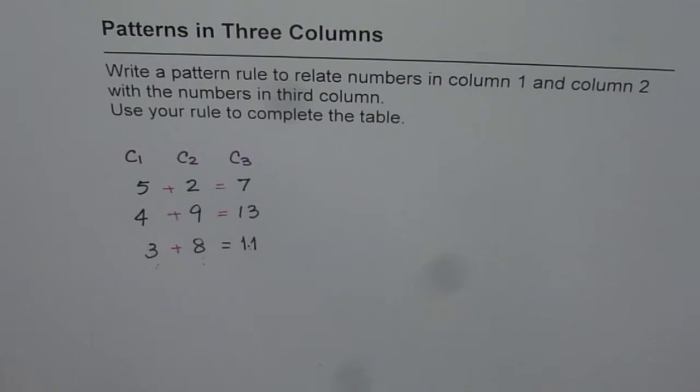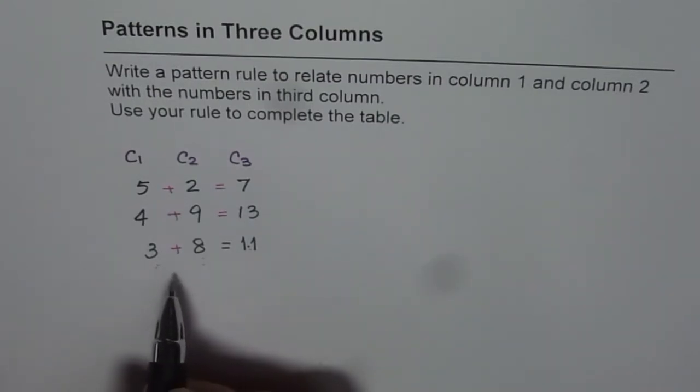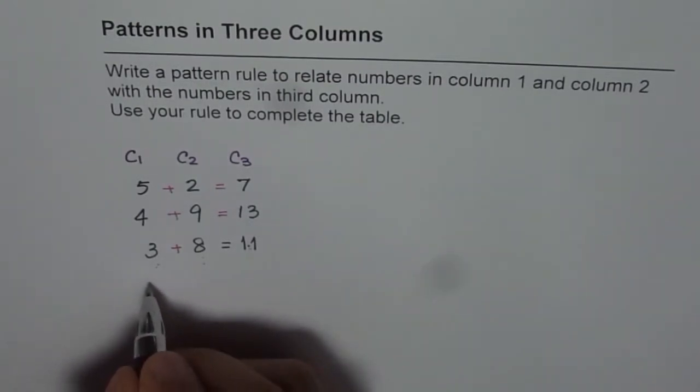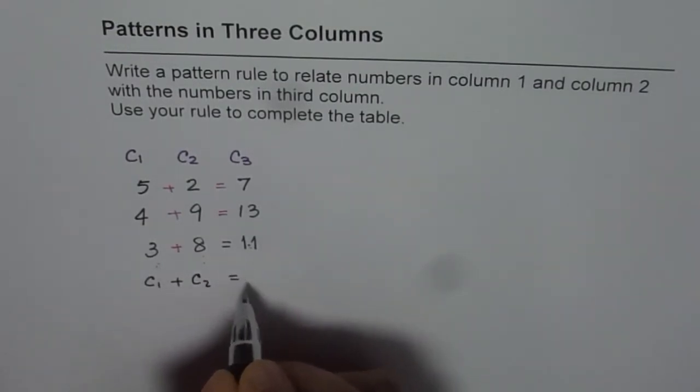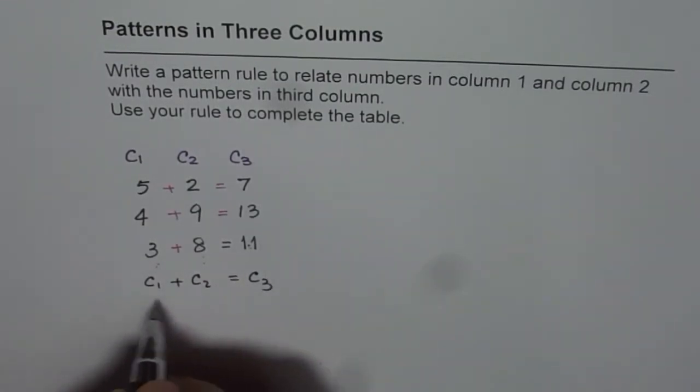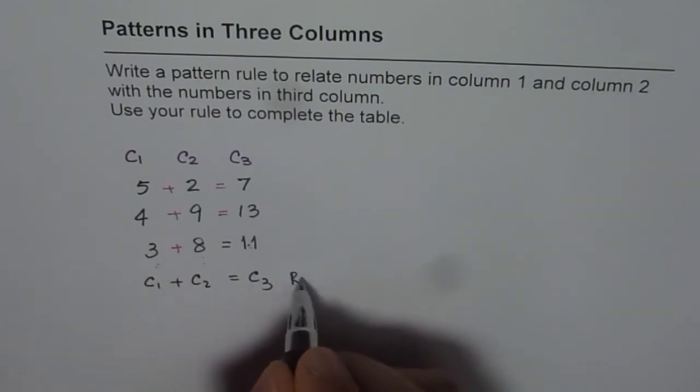So that is how you can figure out combine. So we can say column one plus column two is equal to column three. So that becomes our rule. Do you understand? So that is how we can get our rule.